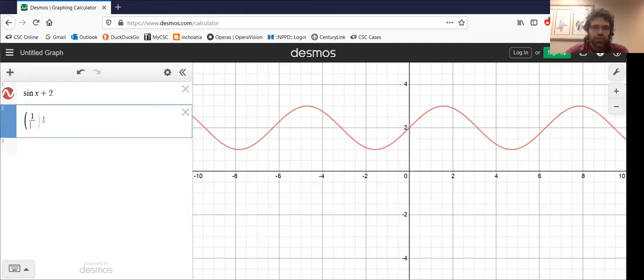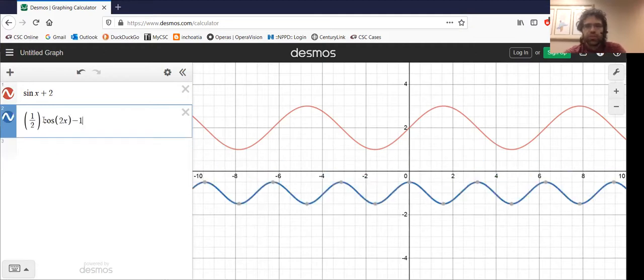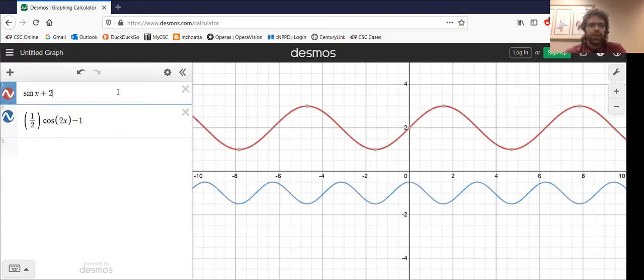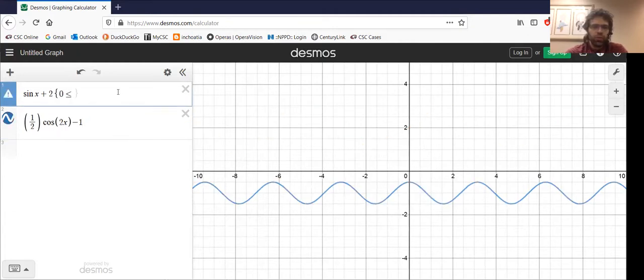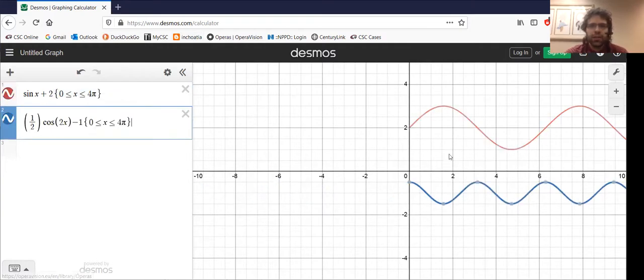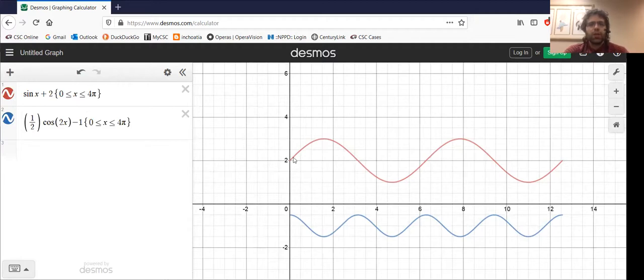So there's f of x here. Here is g of x. We're on the interval from zero to four pi. And okay, we can see that the red function, which is f of x, the sine function is above the blue function, the cosine function.